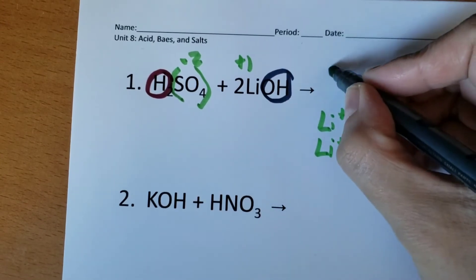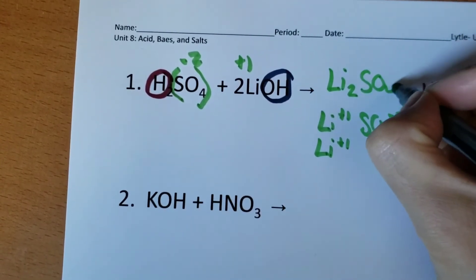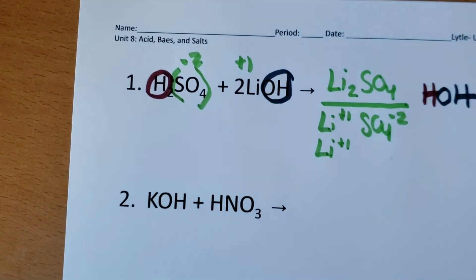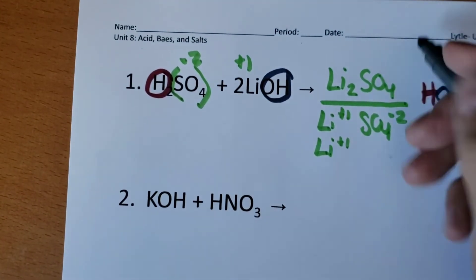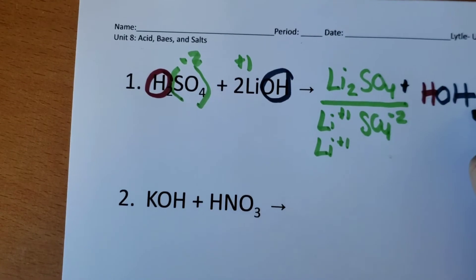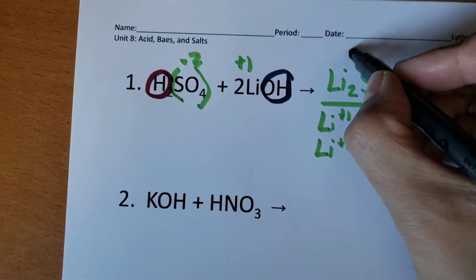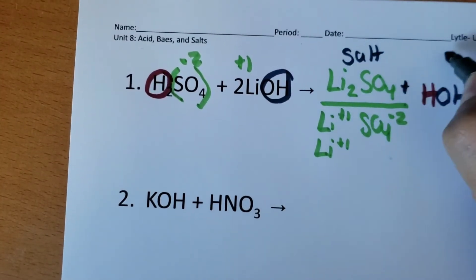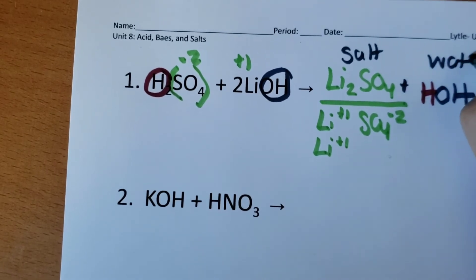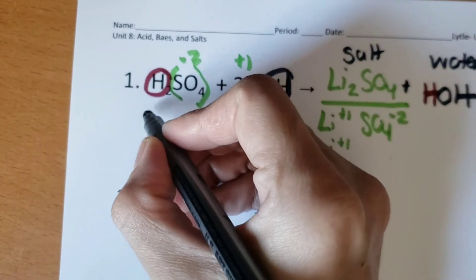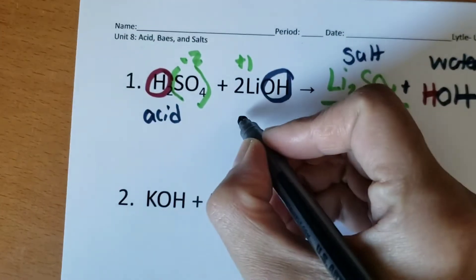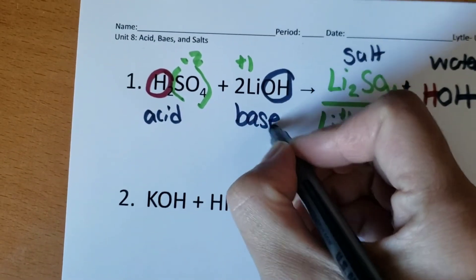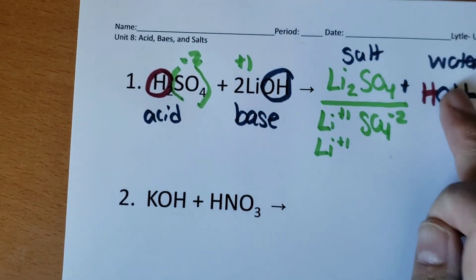So lithium sulfate has this formula. And here I have plus water. So this is the salt, and this is the water. So here we know that we have an acid and a base make salt and water. Let's try the next example.